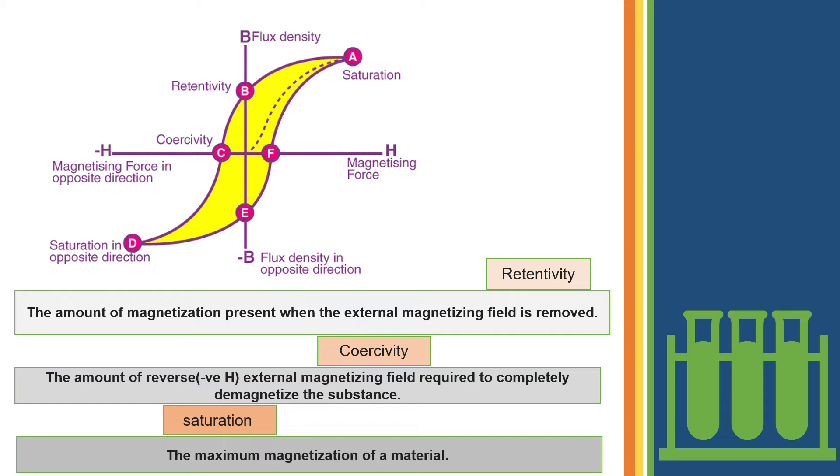Retentivity is the amount of magnetization present when the external magnetic field is removed. Similarly, coercivity is the amount of reverse external magnetizing field required to completely demagnetize the substance. Saturation is the maximum magnetization of the material.